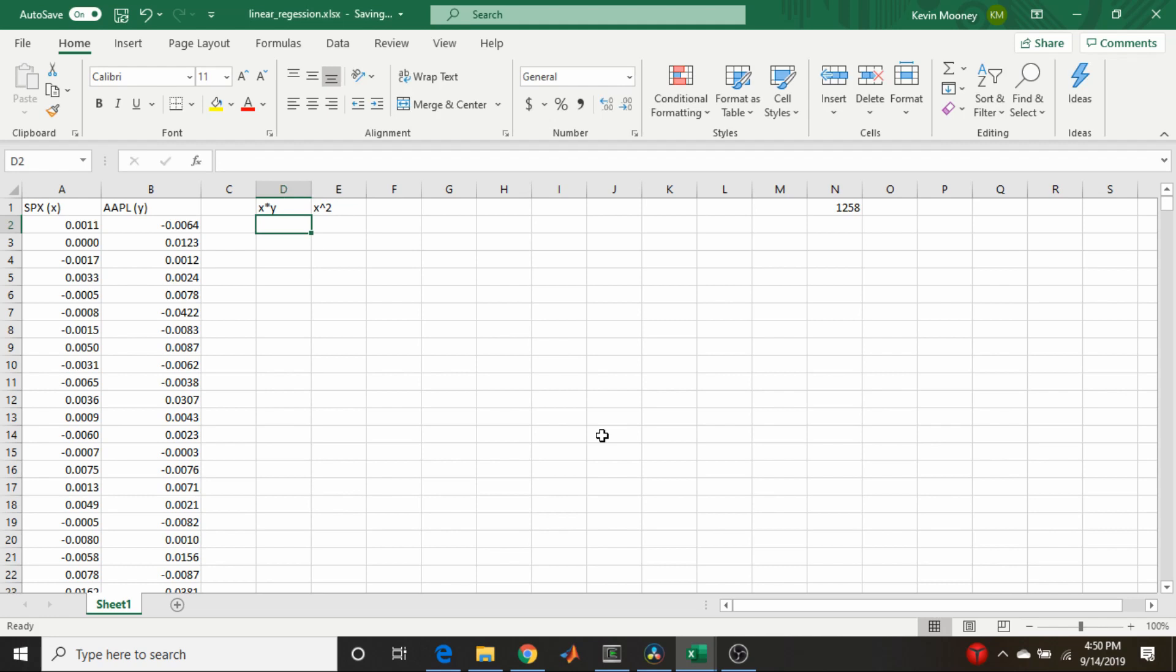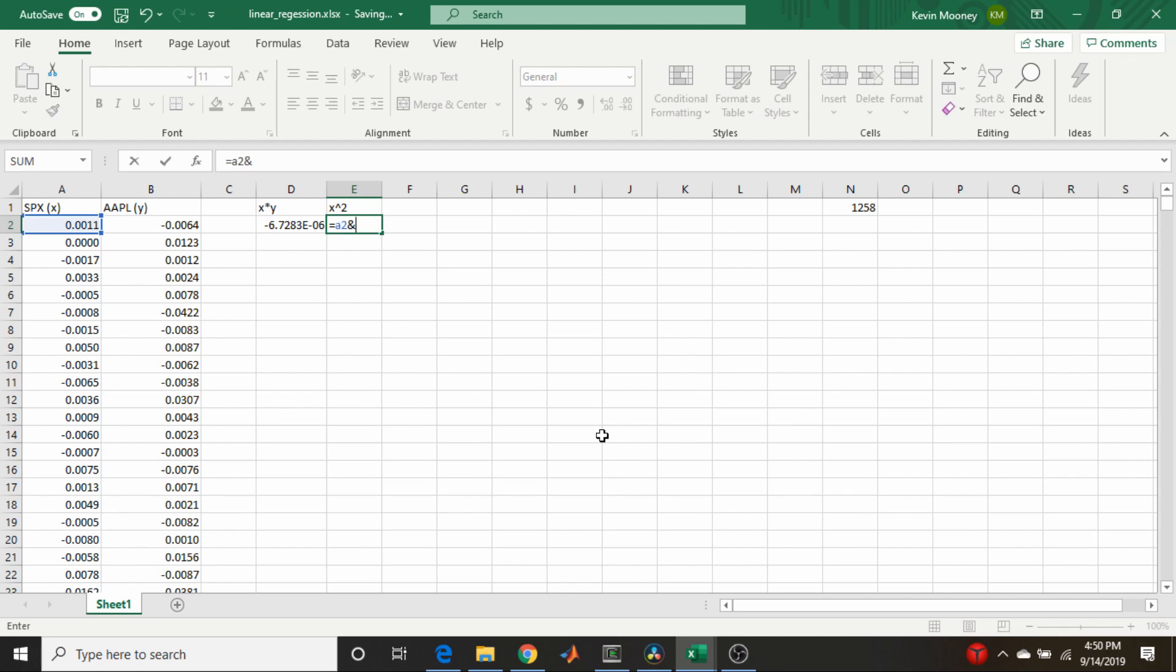And then obviously this is going to be equal to what? a2 times b2. And this will be equal to a2 squared.